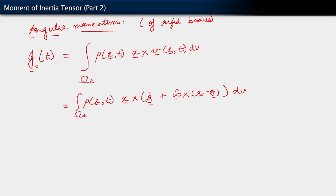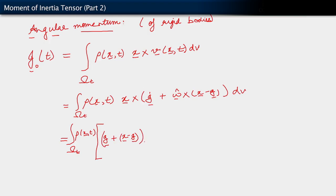Now I am going to play another one of these dirty tricks here. What I want to do is rewrite the position x by expressing it as the position of the center of mass plus the position relative to the center of mass. So what I am going to do is write the integral over omega_t of ρ(x,t), writing x cross everything as (g plus (x minus g)) cross (ġ plus ω̂ cross (x minus g)).